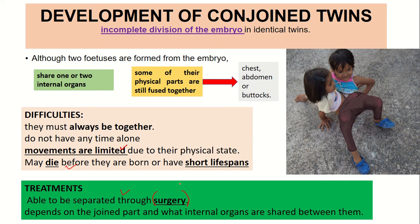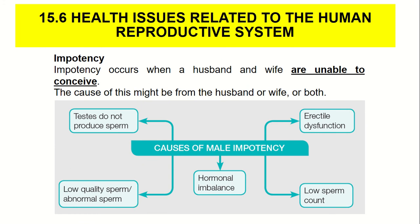Now let's discuss 15.6, health issues related to the human reproductive system. Impotency — or 'mandul' in Malay — refers to when a husband and wife are unable to conceive, meaning they cannot have children. This may be caused by the husband, the wife, or both.